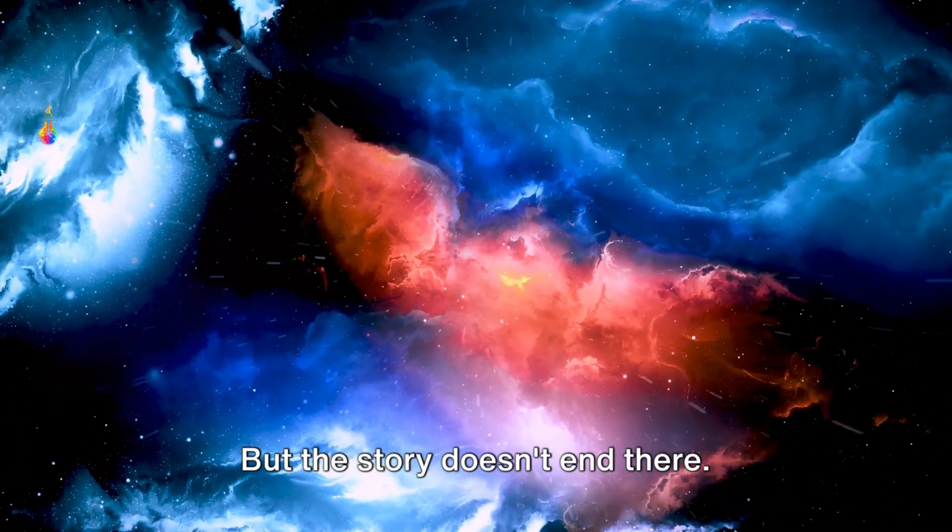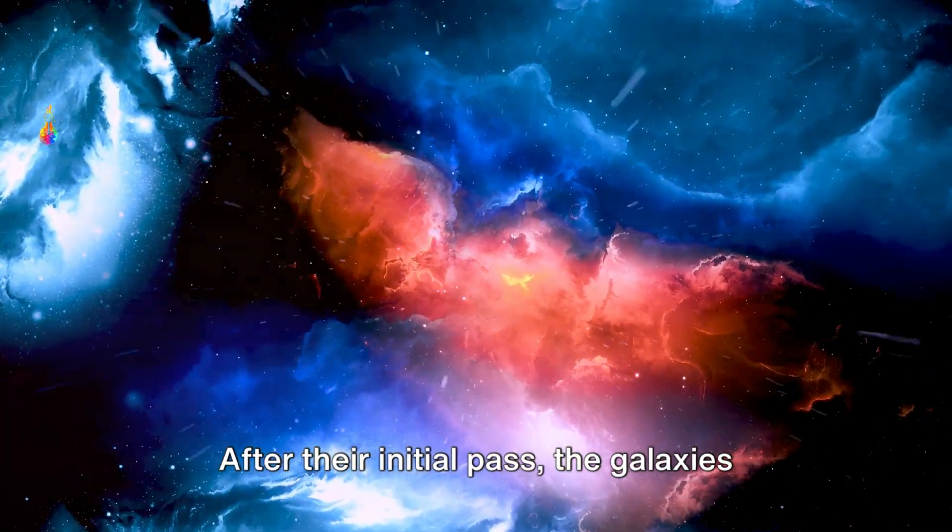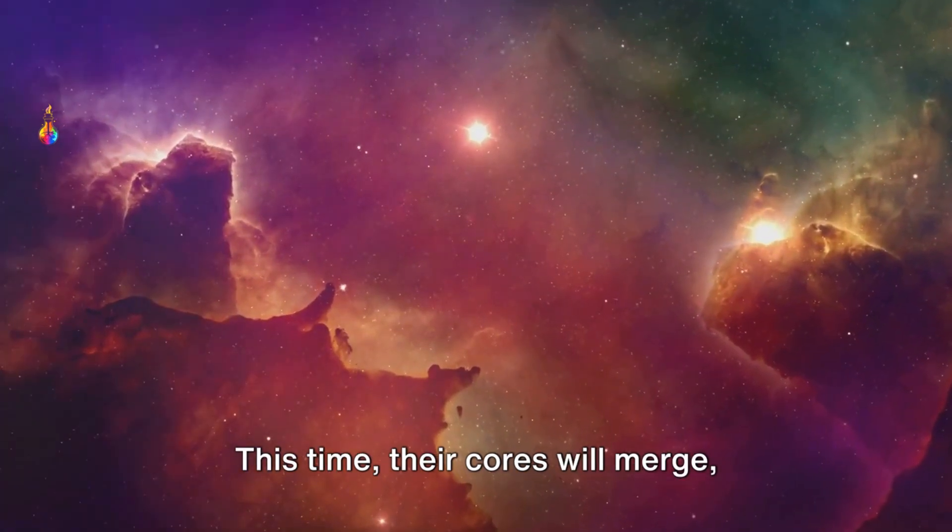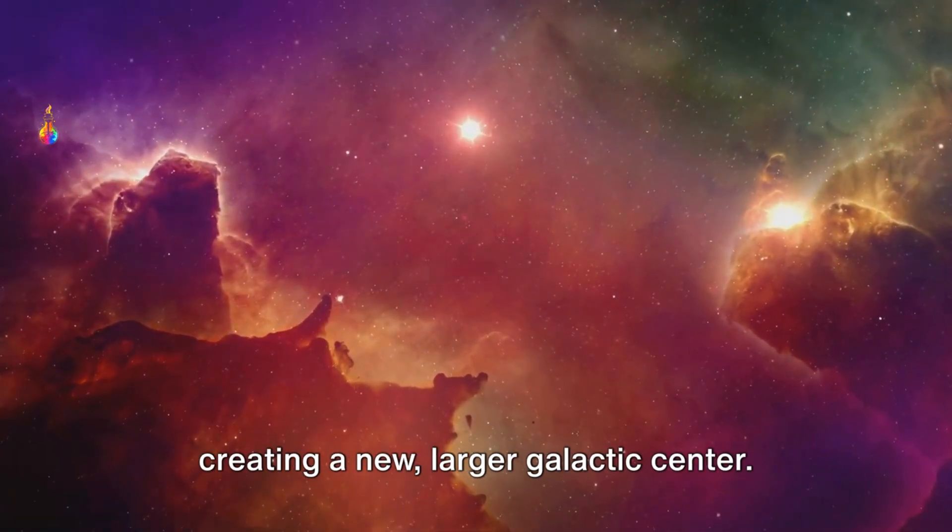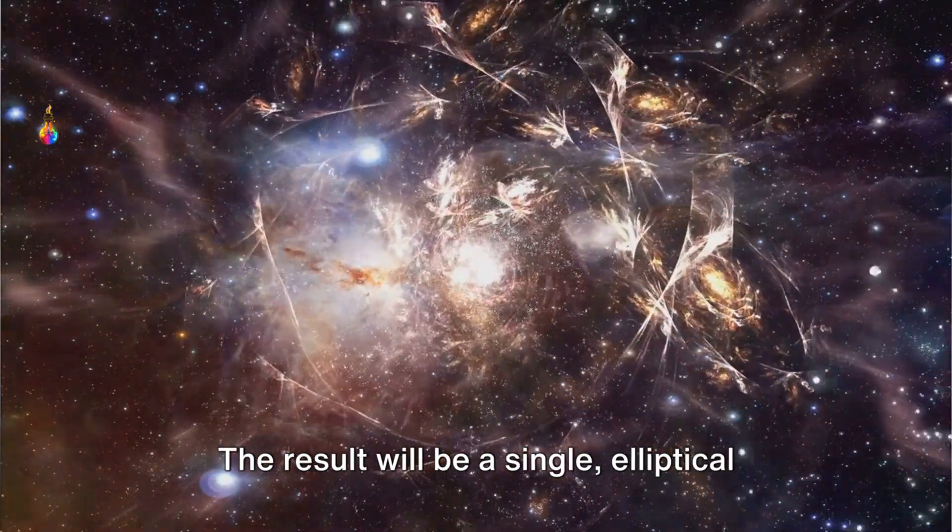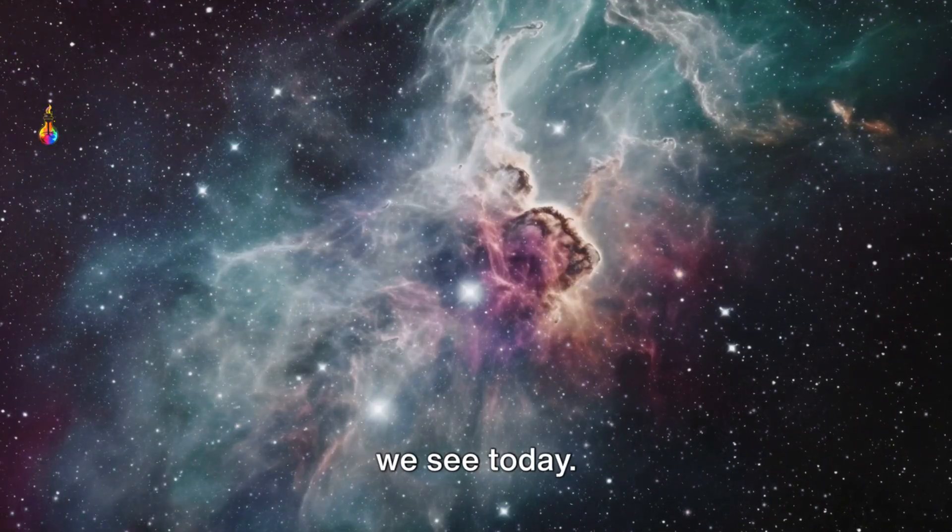But the story doesn't end there. After their initial pass, the galaxies will swing back around for a second, more definitive collision. This time, their cores will merge, creating a new, larger galactic center. The result will be a single, elliptical galaxy, quite different from the spirals we see today.